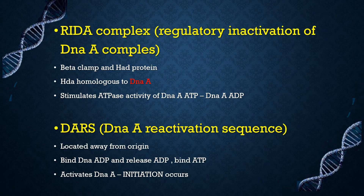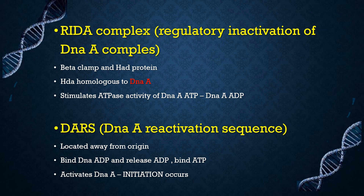The next method is regulatory inactivation of the DnaA complex — the RIDA complex. It consists of the beta clamp and Hda protein. Hda protein is homologous to DnaA protein and stimulates the ATPase activity of DnaA, converting DnaA-ATP to inactive DnaA-ADP. In the presence of DnaA-ADP there will be no initiation. This regulatory inactivation can be reversed by DARS — DNA reactivation sequences. DARS are located away from the origin and bind DnaA-ADP, causing it to release ADP and bind ATP, thus activating DnaA and allowing initiation to occur.